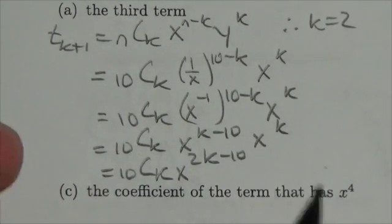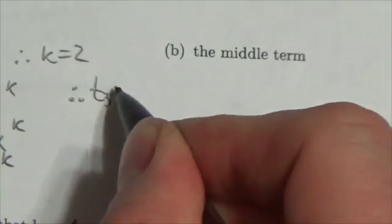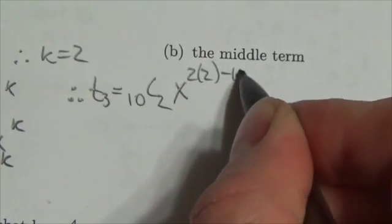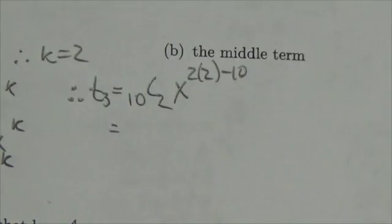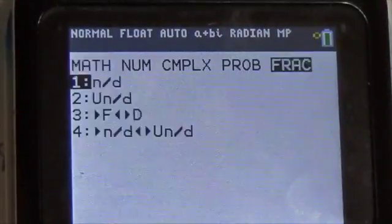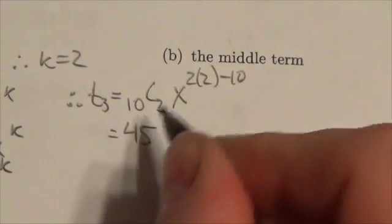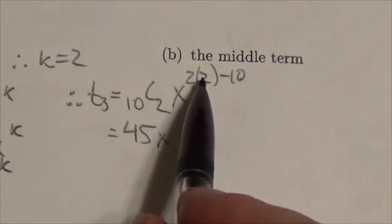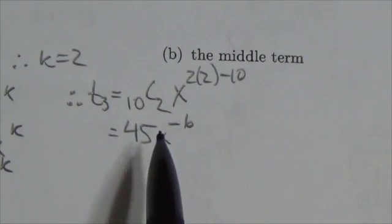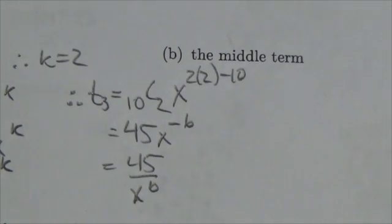Now in this specific case, when k is equal to 2, the third term is going to equal 10 choose 2, times x to the 2 times 2 minus 10. I'll go to my calculator — 10 choose 2 is 45, so there's my coefficient. This is going to be 45x to the — well, 2 times 2 is 4, minus 10 is negative 6 — so that's my third term: 45 times x to the negative 6. Or, if you don't want to write it with a negative exponent, it's 45 over x to the 6th.